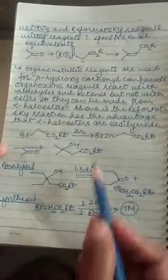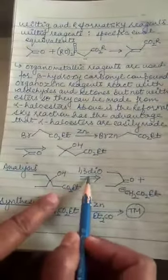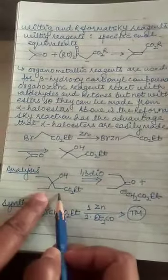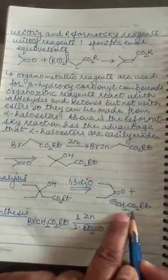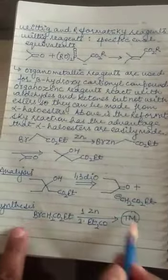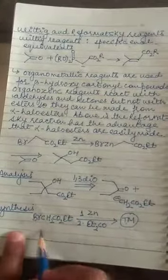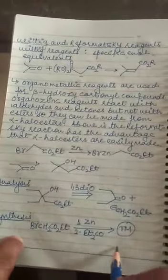This is the Reformatsky reaction has been given here. Now if we see this analysis we have done 1,3-dicarbonyl, the 1,3-difunctionalized disconnection. We will get this ketone and this specific enol equivalent. When these two are reacted we perform the reaction we get the target molecule.